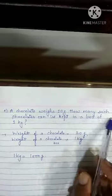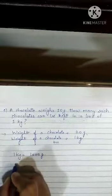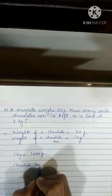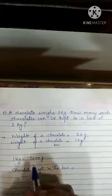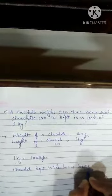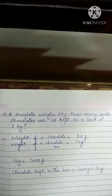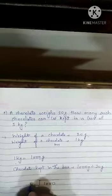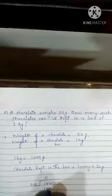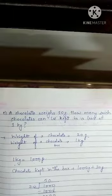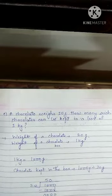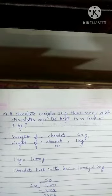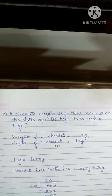How many chocolates can be kept in a box? We have converted, so we will divide gram by gram only. 1000 grams divided by 20 grams. Let's divide: 20 × 5 is 100. Bring down the 0. 20 × 0 is 0. Hence, 50 chocolates can be kept in a box of 1 kg.